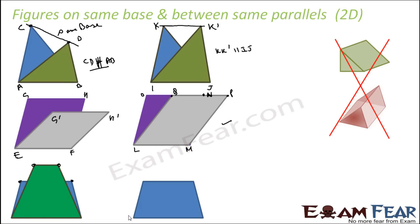Let's draw another pair of parallelograms with base RS. If we name the opposite vertices TU and XY, you can see they share the same base RS, and the vertices T, X, Y, U all form one straight line that is parallel to RS. So this is another valid case of same base and between the same parallels. Remember: visualize everything in two dimensions only.